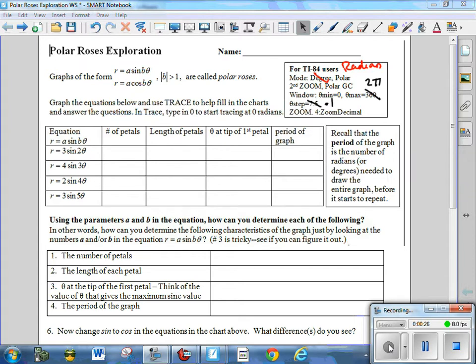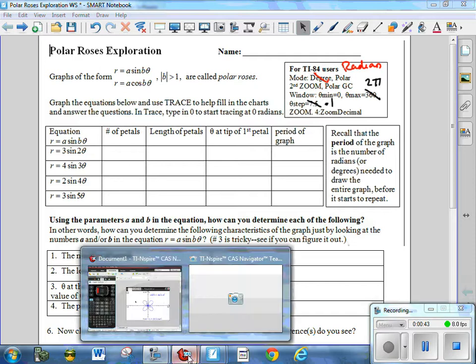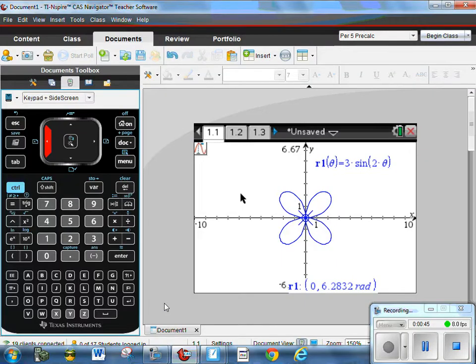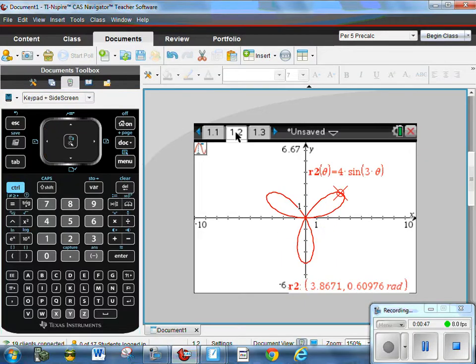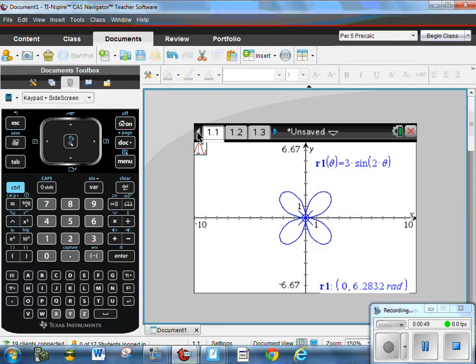So the first thing we're going to do, I'll do this one with you, is we are going to graph the equation r equals 3 sine of 2 theta and look to see what some of the characteristics of this graph are. So let's go ahead and graph that. I think I already have this on, 3 sine of 2 theta, that's it right there.